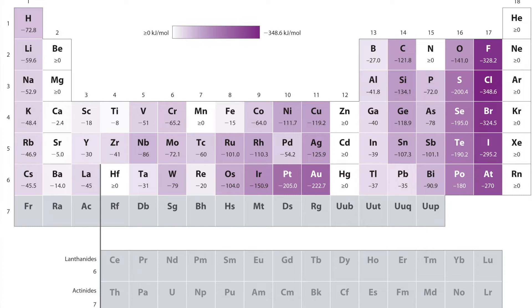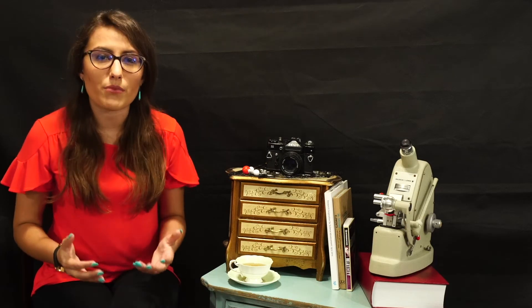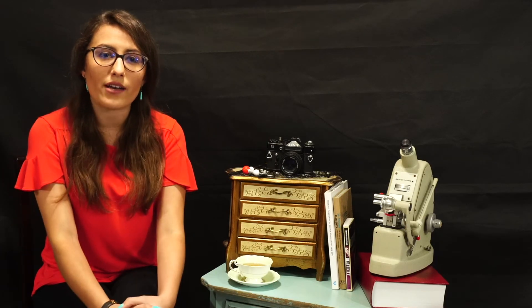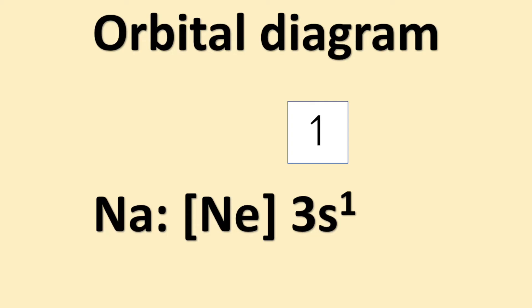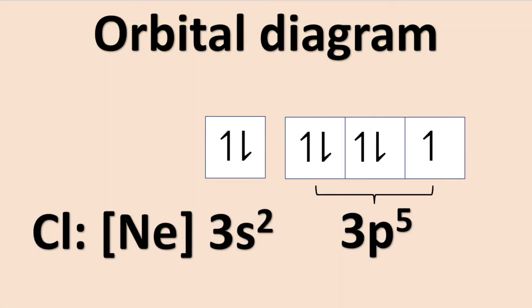Let's look at sodium and chlorine, and try to determine which of the two atoms would have a more negative electron affinity — meaning which atom is more likely to accept an electron. We know that sodium has an electron configuration of [Ne] 3s¹, and chlorine is [Ne] 3s² 3p⁵.